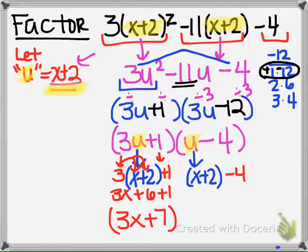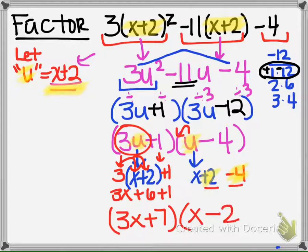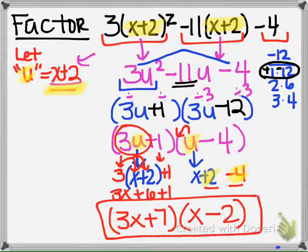Over here, we just have x plus 2 minus 4, so these parentheses can go away. We don't have anything in front of this u like we did in the first one — that one had a 3u. This one doesn't have anything in front, so there's nothing to distribute. We can put the positive 2 and the negative 4 together, and we would get negative 2 when we combine these. So this is our factored form.